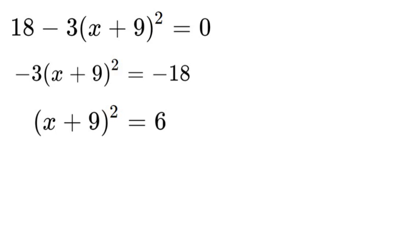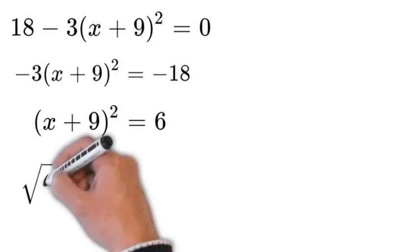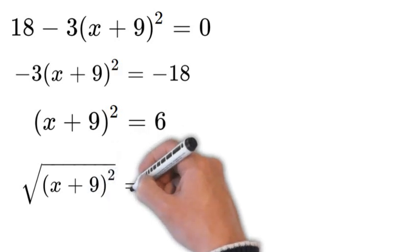So the next step is to square root both sides because we want to get rid of that x plus 9 squared. So we will set both sides with a square root over it. It will look like this.